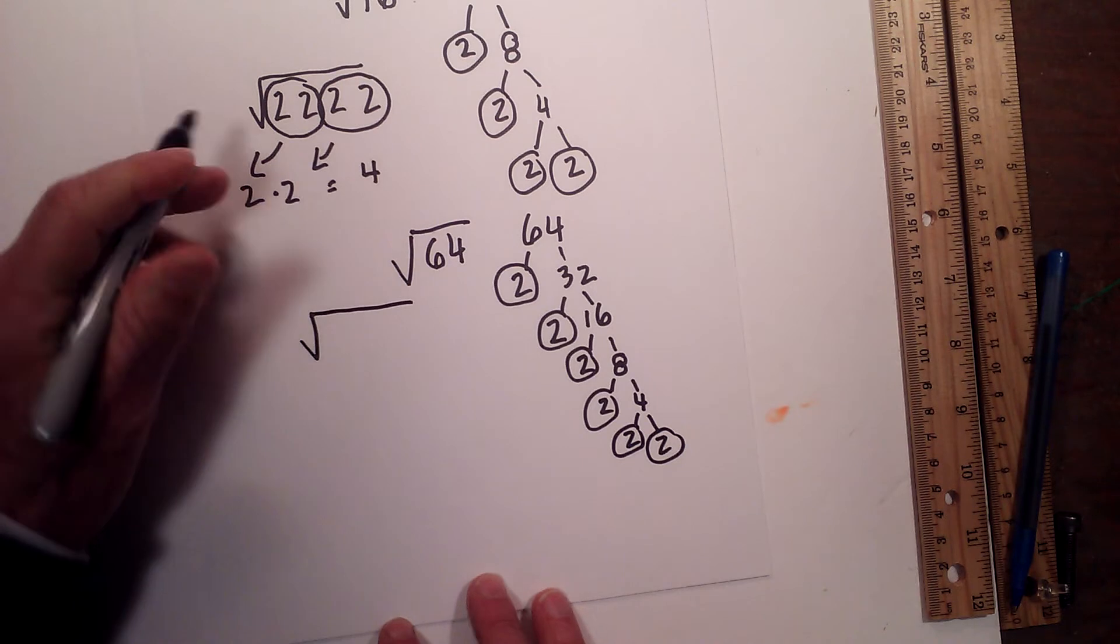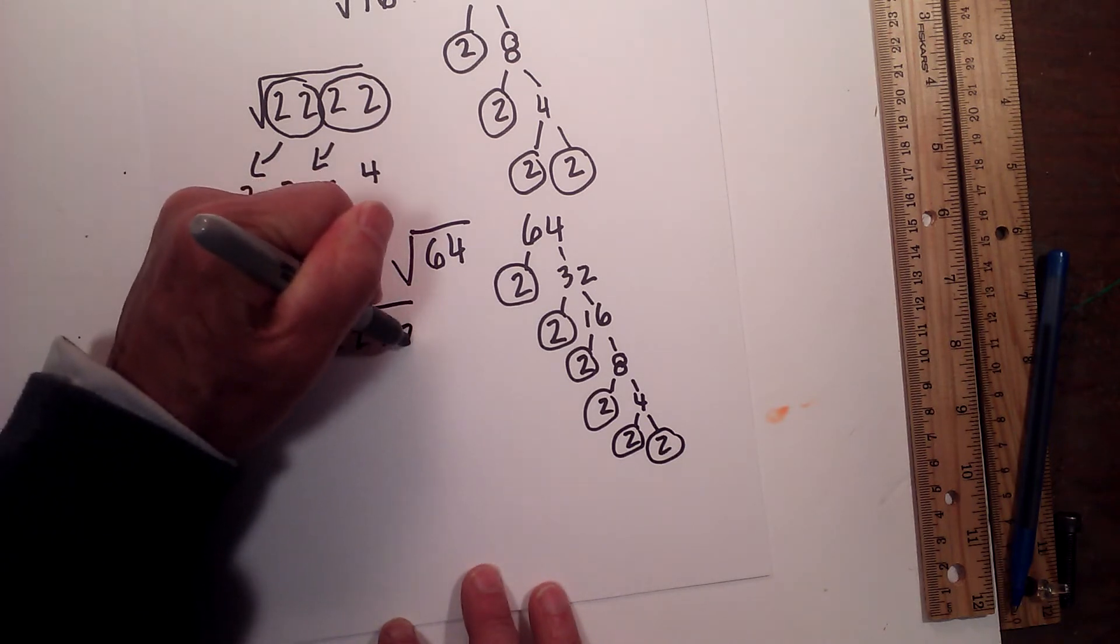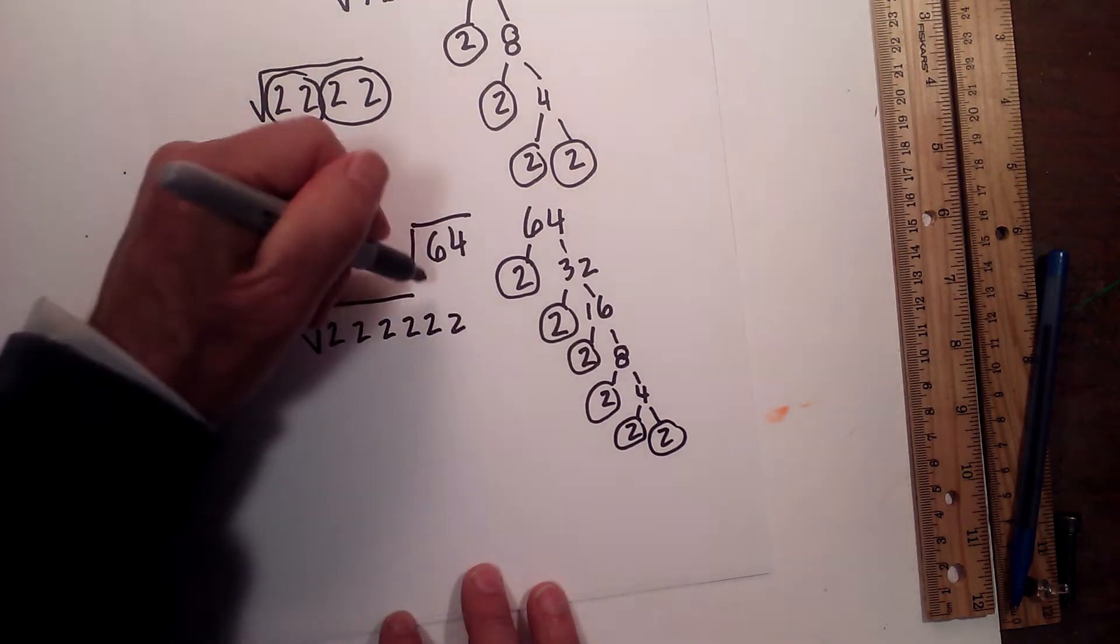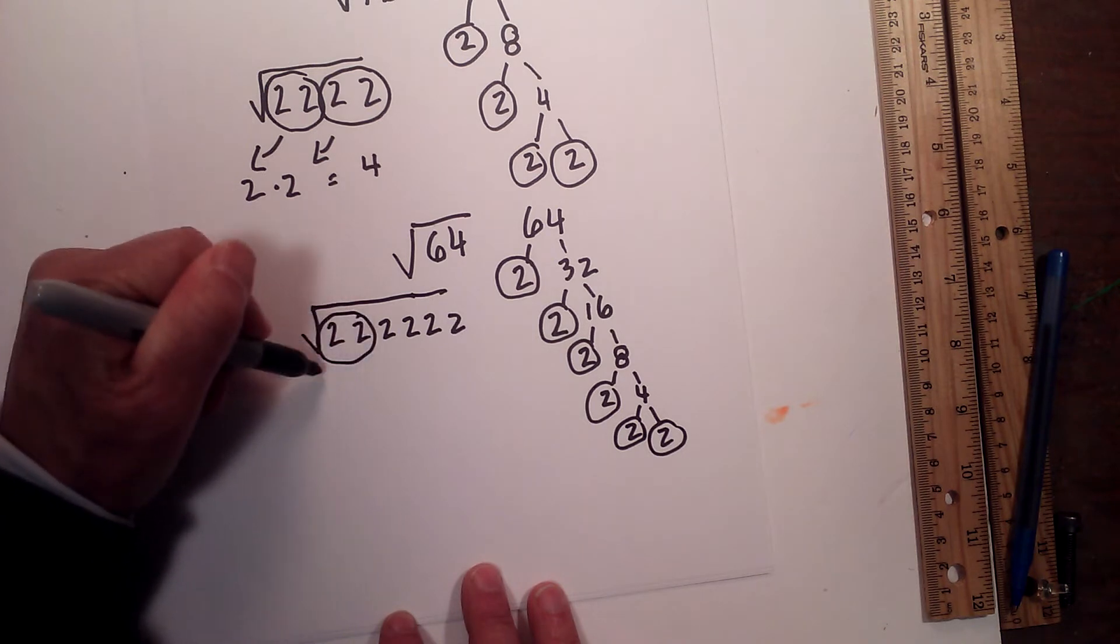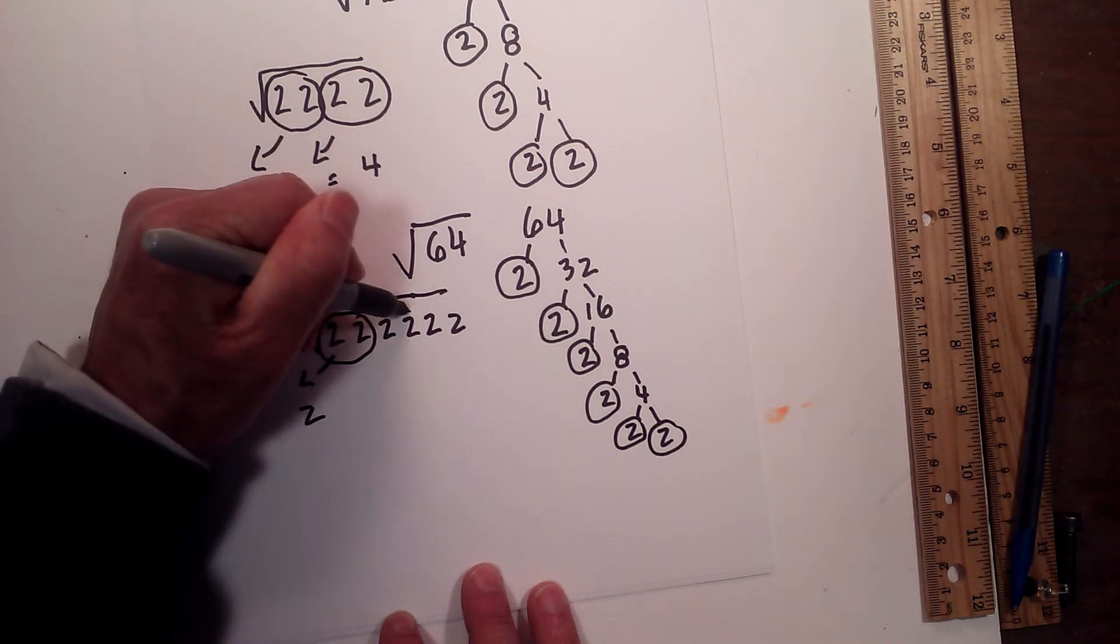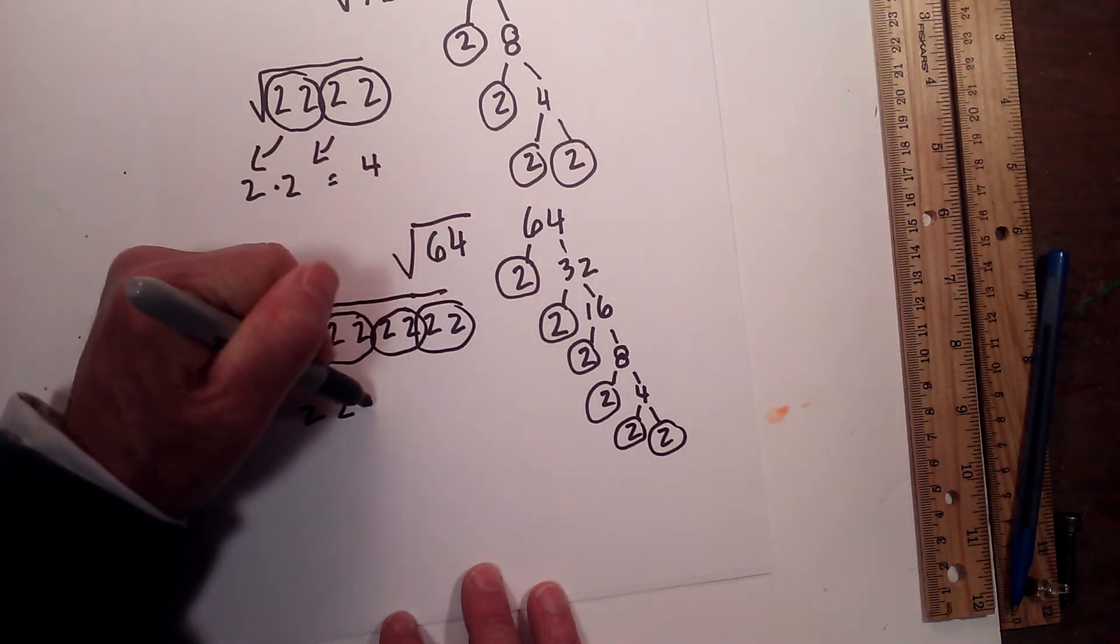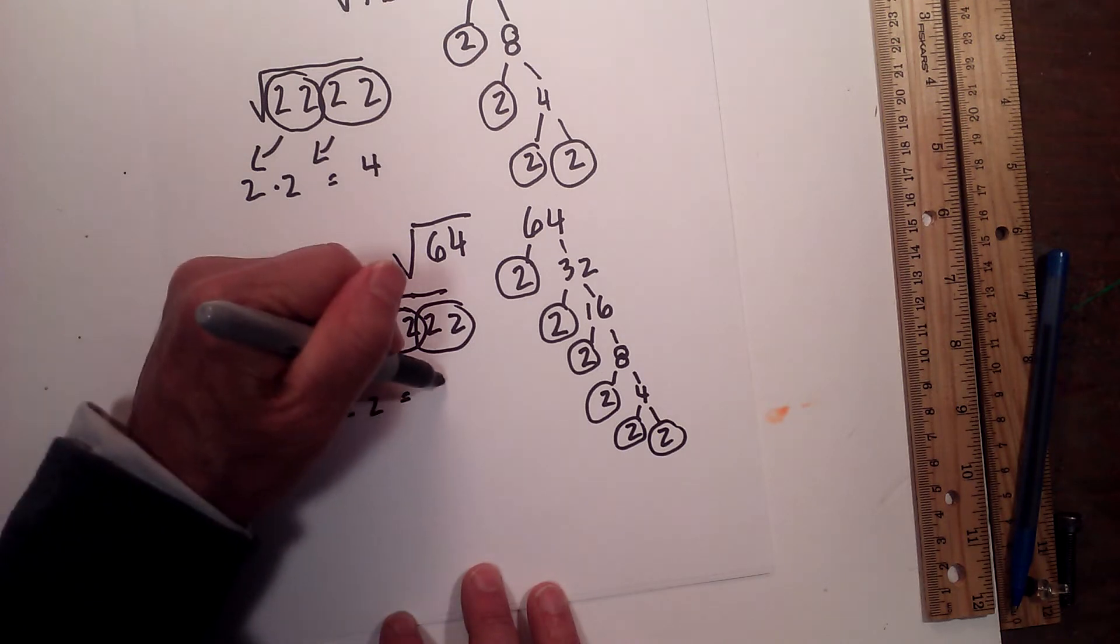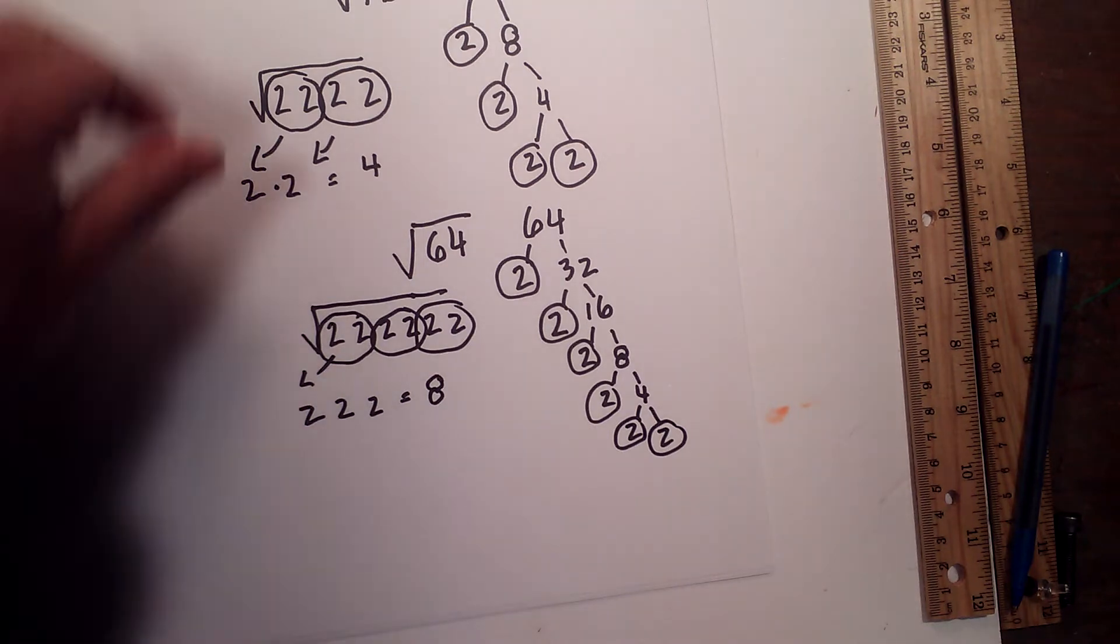So I'm going to rewrite the square root symbol, 1, 2, 3, 4, 5, 6. Remember, in order to get out from under the square root symbol, they must be in pairs. So I have a pair here, and a pair here, and a pair here. So that is 2 times 2 is 4, and 4 times 2 is 8. So the square root of 64 is 8.